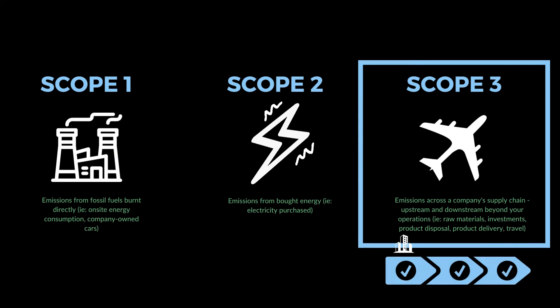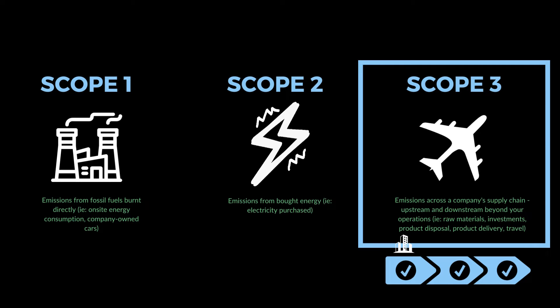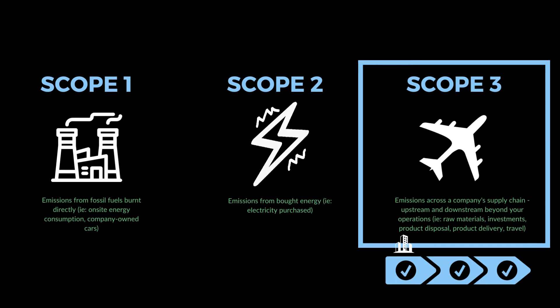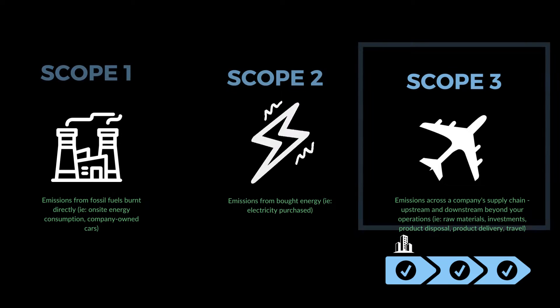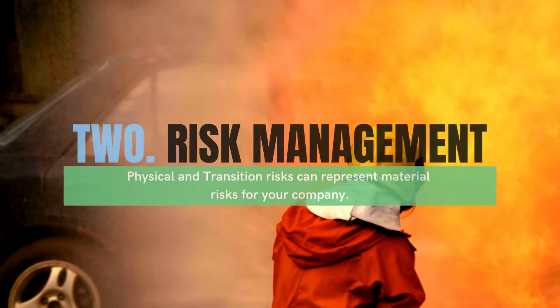So what is Scope 1, 2, and 3? Scope 1 is direct emissions. Scope 2 is indirect or bought — you can think energy purchased. And Scope 3 is other emissions related to your business.